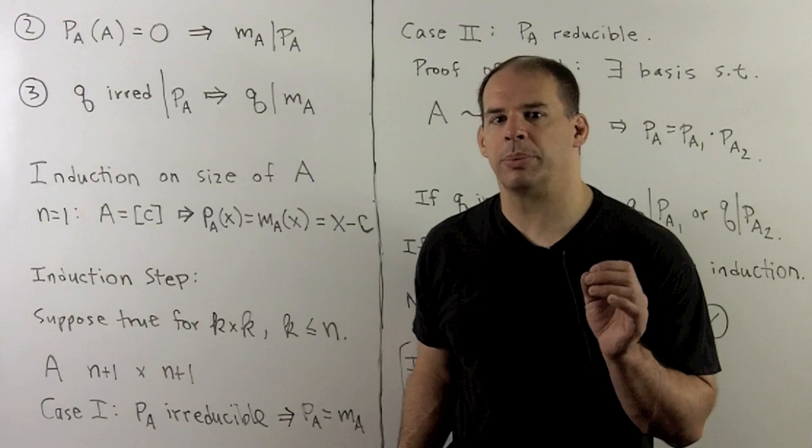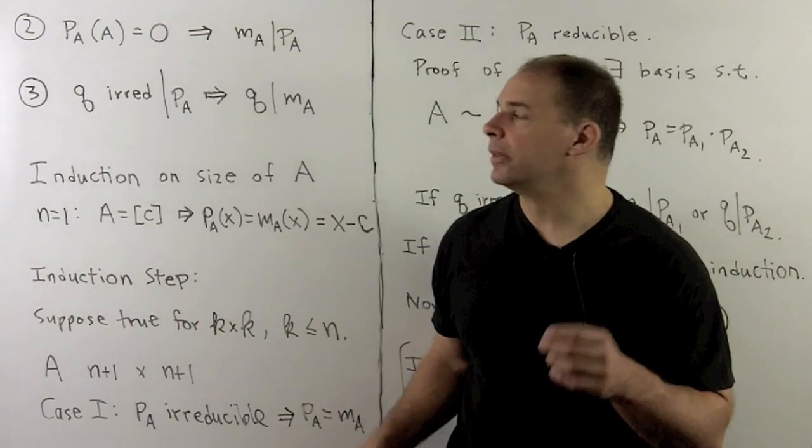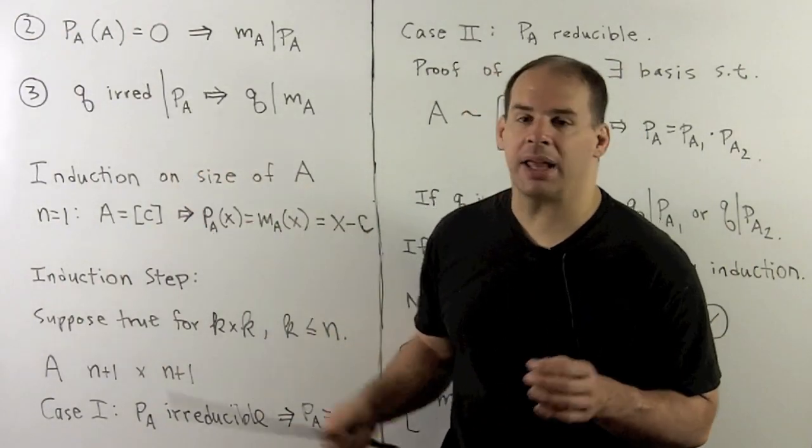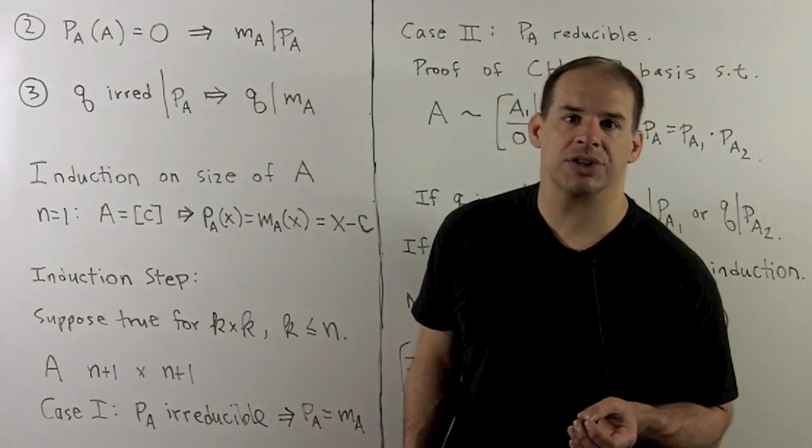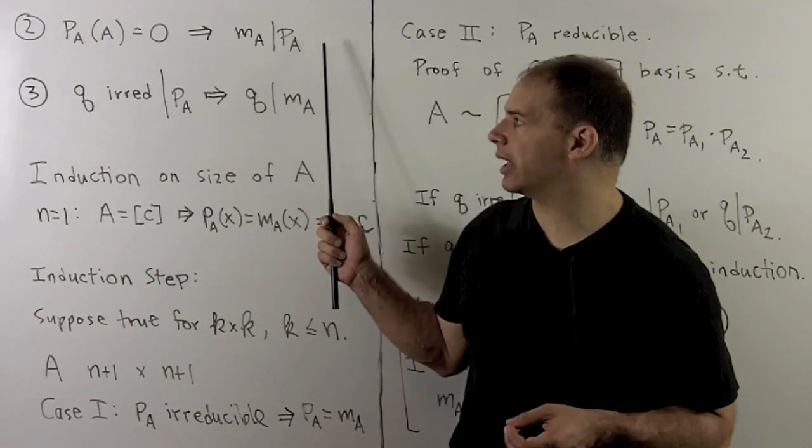For the second part, we apply the Cayley-Hamilton theorem. Now, since P_A applied to A itself gives the zero matrix, part one says M_A divides P_A.